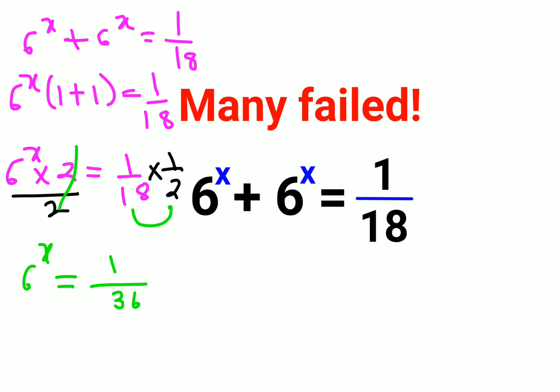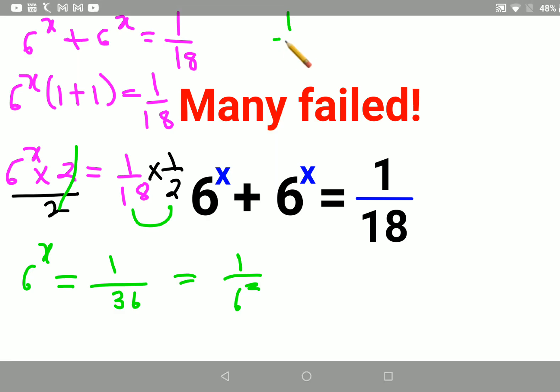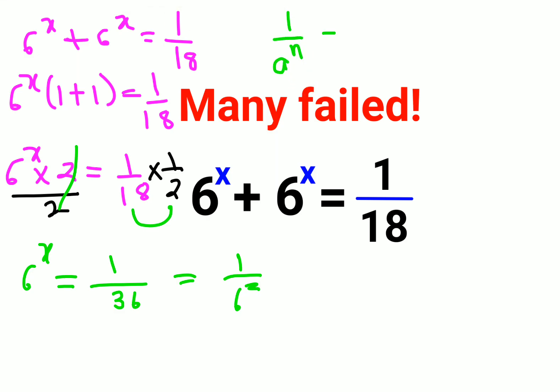Now interesting thing is that this 1 upon 36 can be written as 1 upon 6 square. And 1 upon a raised to n can also be written as a raised to minus n.